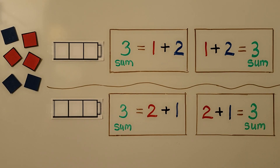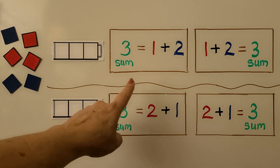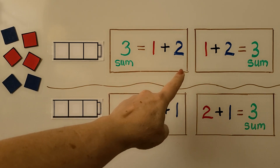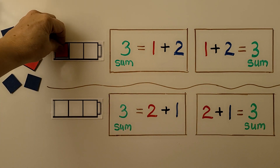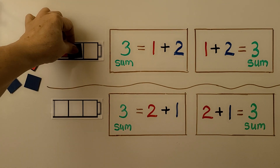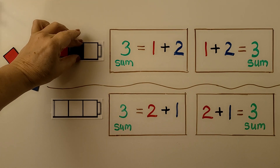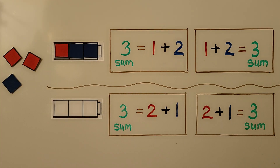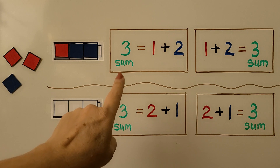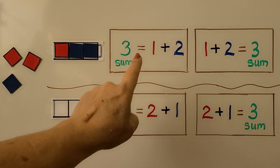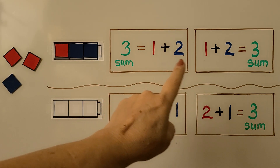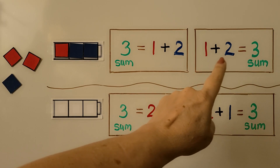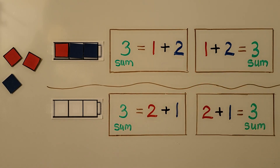We can use two different colors and a cube train to show 3 is equal to 1 plus 2. We can take one red counter and two blue counters and it will be equal to 3. We can write it with the sum on this side — 3 is equal to 1 plus 2 — or we can write 1 plus 2 is equal to 3, with the sum on that side.